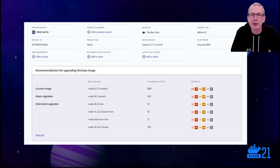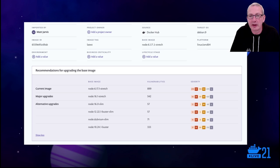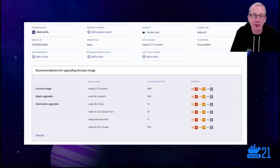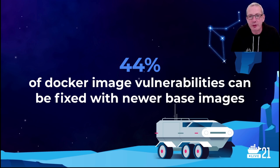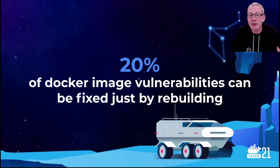You can also leverage the tools you're using to scan your container images. Here Snyk is able to show us a range of base image upgrades and alternative images which can reduce the number of vulnerabilities in our base image. The data backs these assertions up: from the millions of container image scans on our platform, over 40 percent of Docker image vulnerabilities can usually be fixed by upgrading the base image, and over 20 percent can be fixed just by rebuilding, since a lot of containers will upgrade software during the build process.